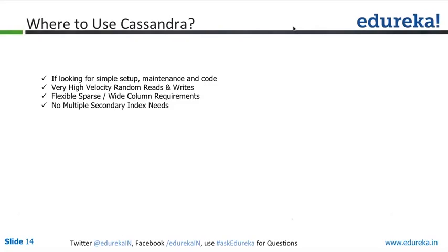But if you have an application that requires group-by functionality, Cassandra is probably not the right system to choose. It does support secondary indexes, but when you bring in secondary indexes, the internal overhead becomes so high that overall system performance comes down. The more secondary indexes you use, the less the performance. So you can use Cassandra where you have less secondary index needs, want a simple setup and maintenance, very high velocity of random reads and writes, and wide-column requirements.